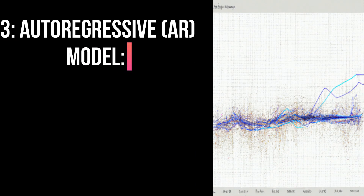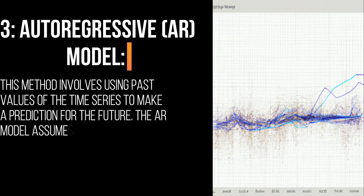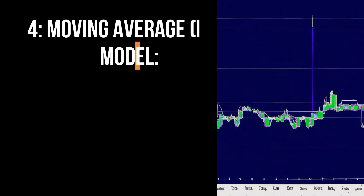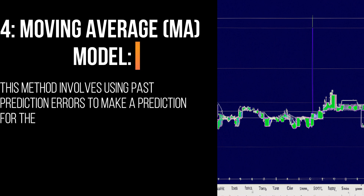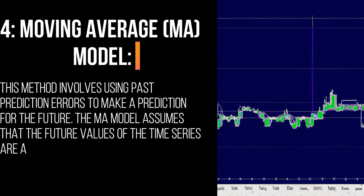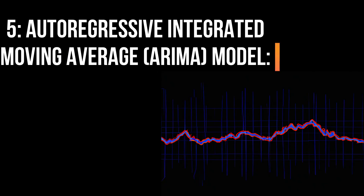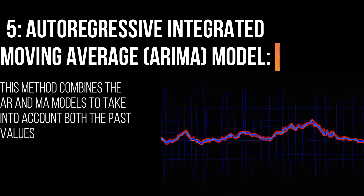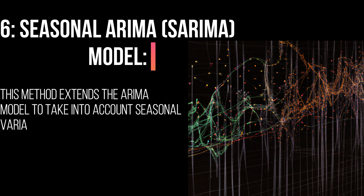3. Autoregressive (AR) model: This method involves using past values of the time series to make a prediction for the future. The AR model assumes that the future values of the time series are a linear combination of the past values. 4. Moving Average (MA) model: This method involves using past prediction errors to make a prediction for the future. The MA model assumes that the future values of the time series are a linear combination of the past errors. 5. Autoregressive Integrated Moving Average (ARIMA) Model: This method combines the AR and MA models to take into account both the past values and the past prediction errors. 6. Seasonal ARIMA (SARIMA) Model: This method extends the ARIMA model to take into account seasonal variations in the time series data.